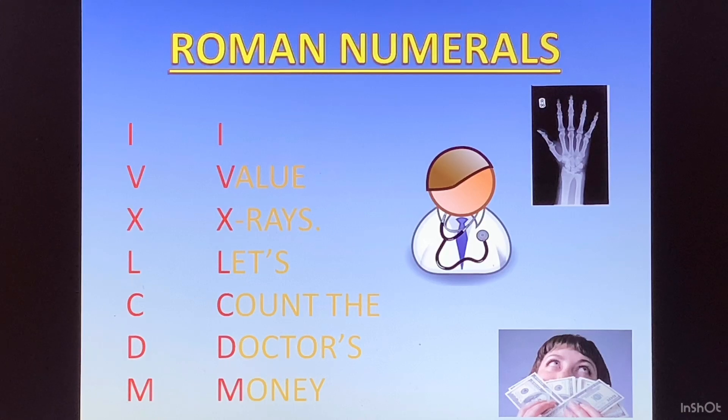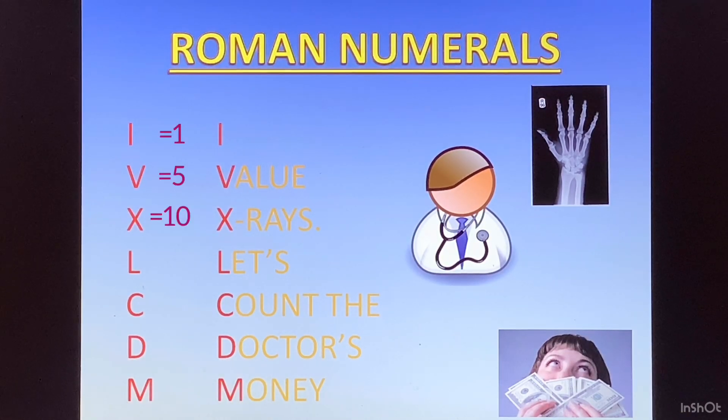And the values are: I is 1, V is 5, X is 10, L is 50, C is 100, D is 500, and M is 1000. Now these were the seven basic Roman numerals.